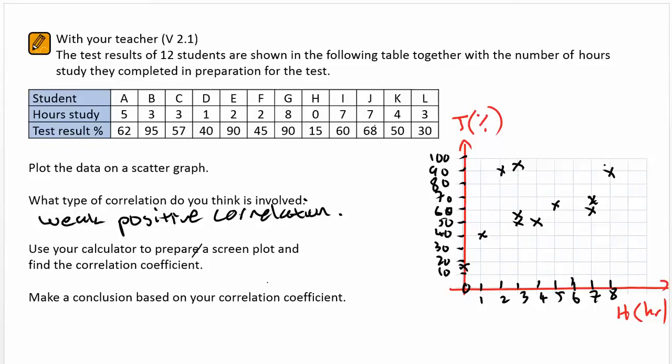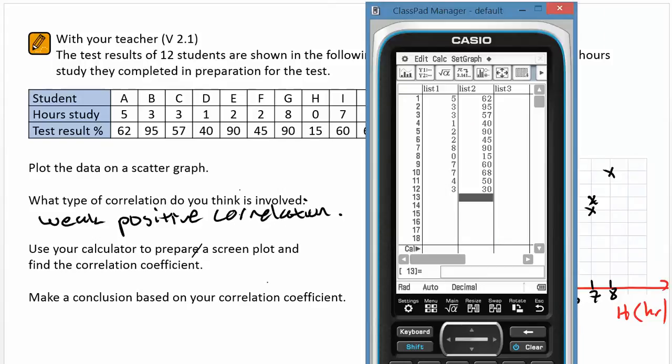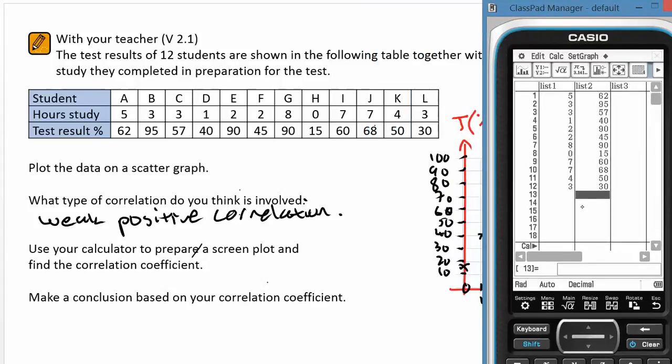Now we'll work that through on the calculator. So entering the values as ordered pairs: 5,62; 3,95; through to 3,30.